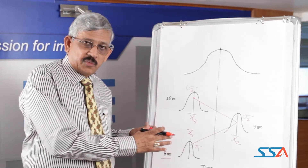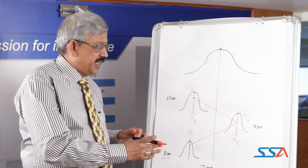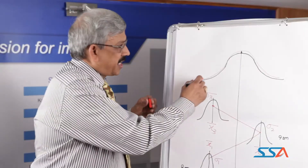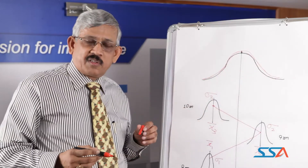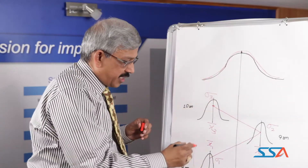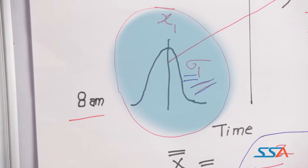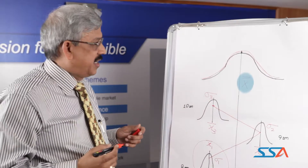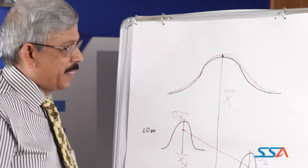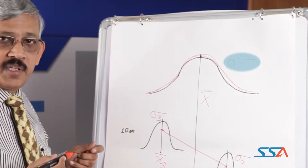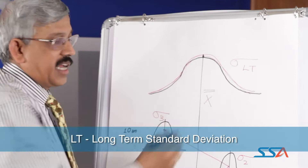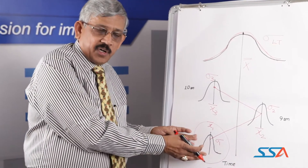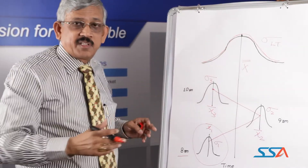If we take all the shafts produced by this machine from the morning to the end of the shift and put them all in a box, and try to find out the overall variance of the entire production, that overall variance will be much larger than the individual variance seen at any particular point in time. The mean value of this entire batch is called the population mean X double bar, and the standard deviation of this entire population is called the long-term standard deviation.